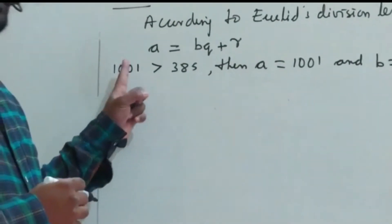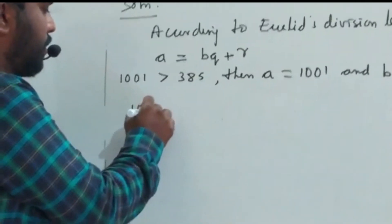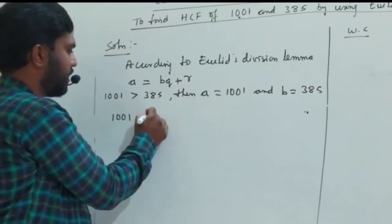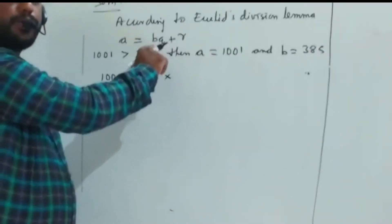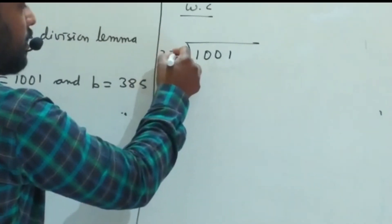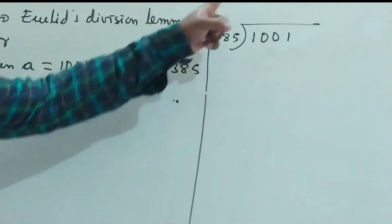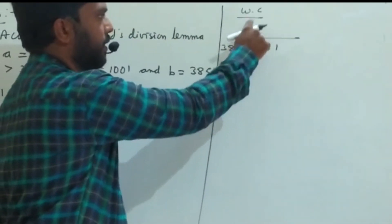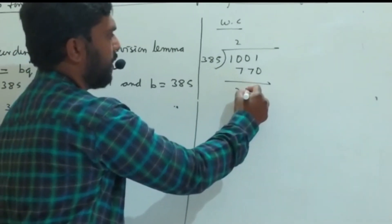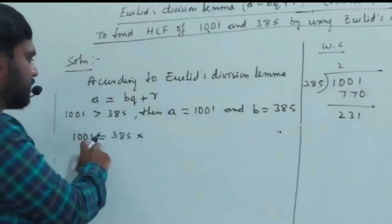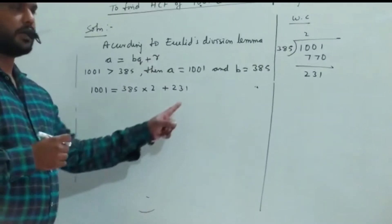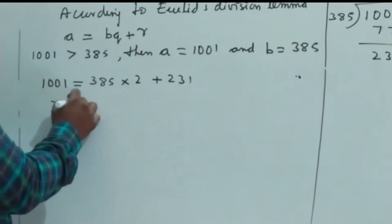We have to apply Euclid's algorithm for 1001 and 385. So 1001 equals 385 into — we divide and get a quotient and remainder. 385 goes into 1001 two times: 385 times 2 equals 770. Subtracting, the remainder is 231. So 1001 is equal to 385 into 2 plus 231. The remainder is not zero.